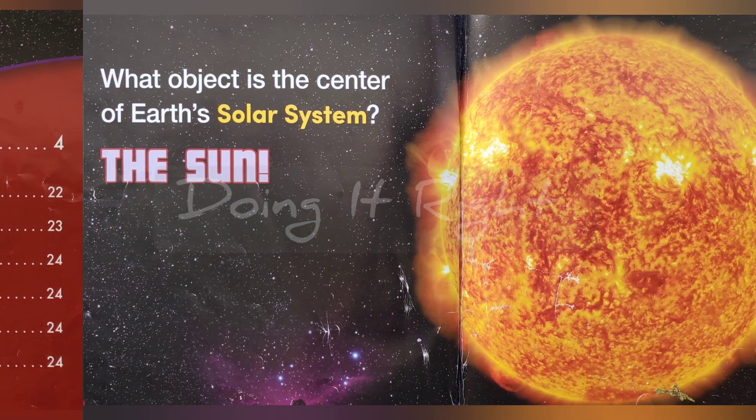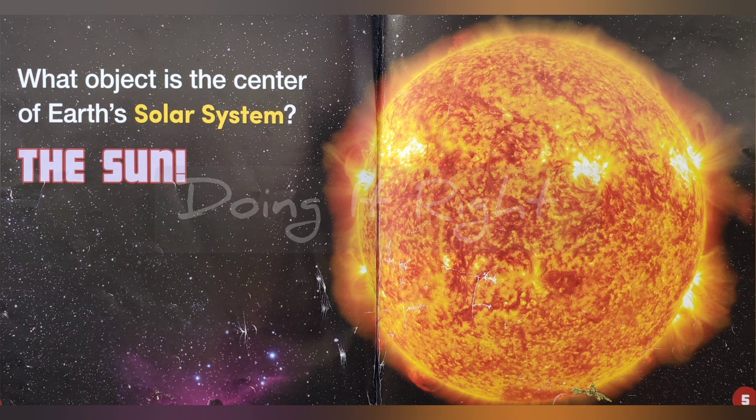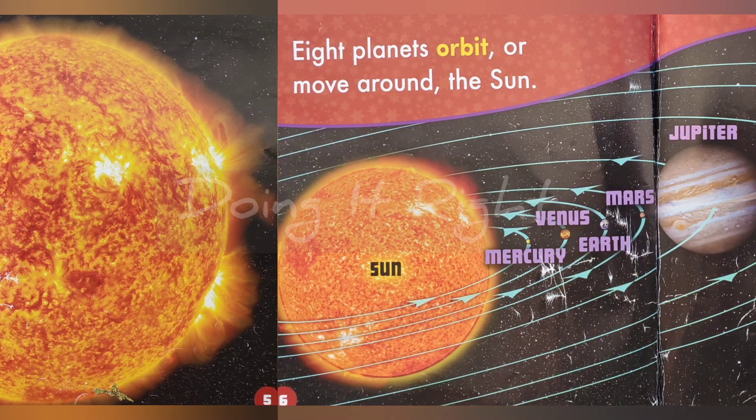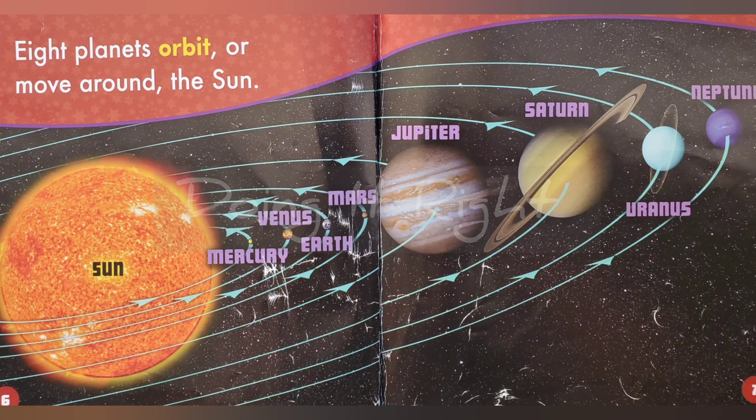What object is in the center of Earth's solar system? The Sun. Eight planets orbit, or move around, the Sun.